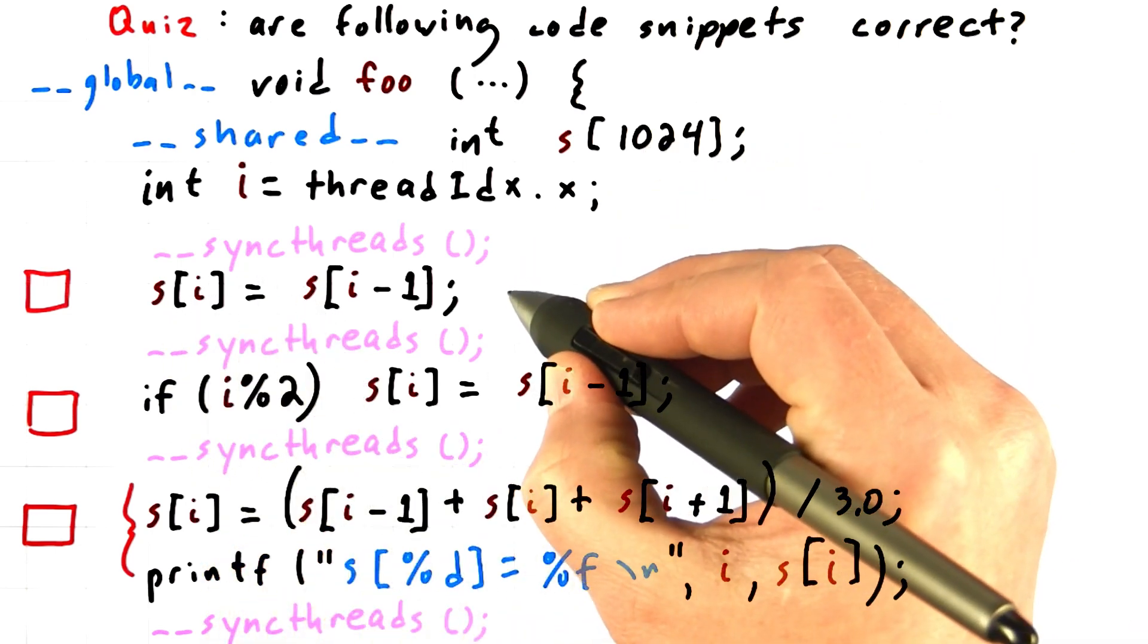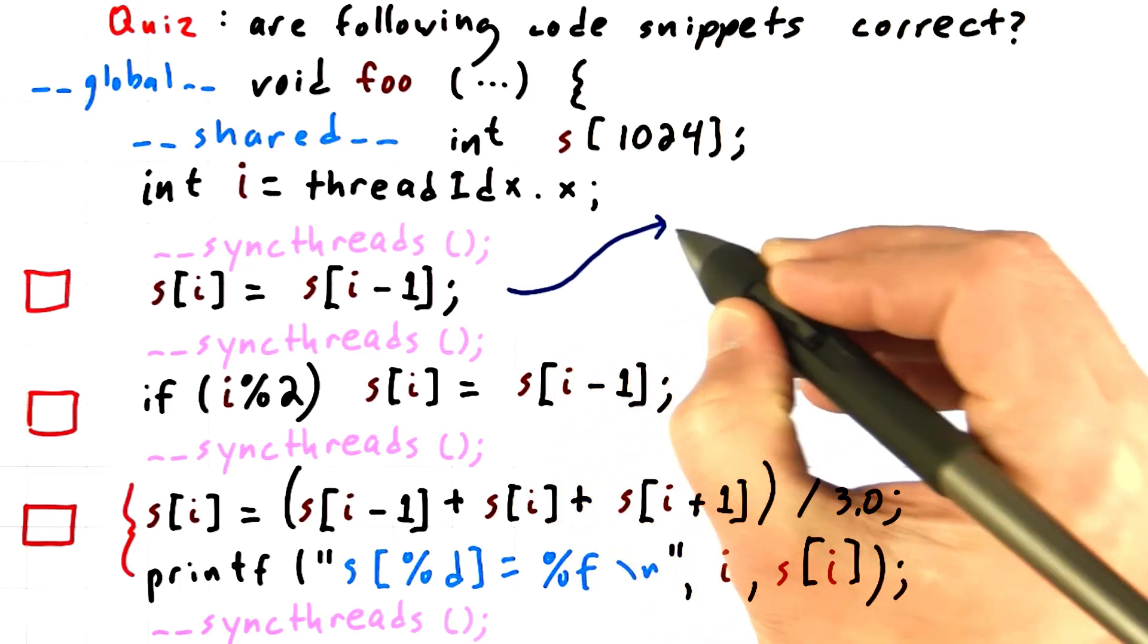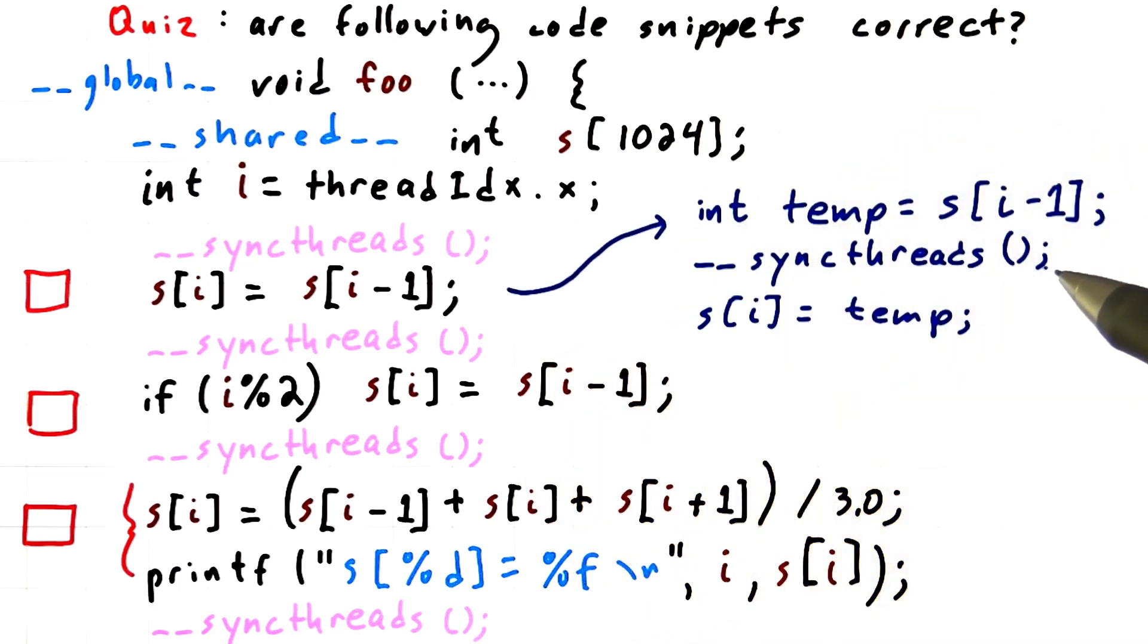So the correct way to write this, as before, would be something like this, where we go ahead and insert __syncthreads and a temporary variable to separate the read and the write.